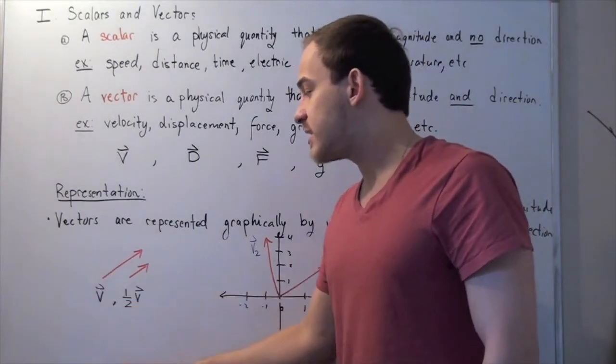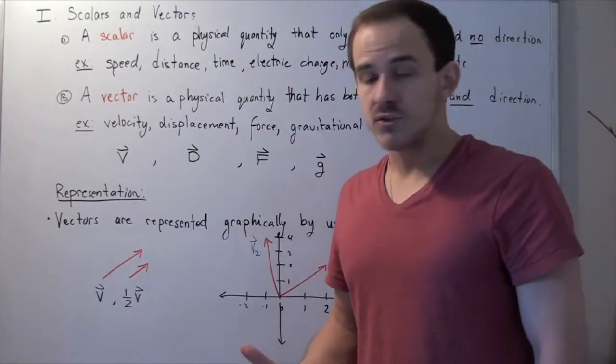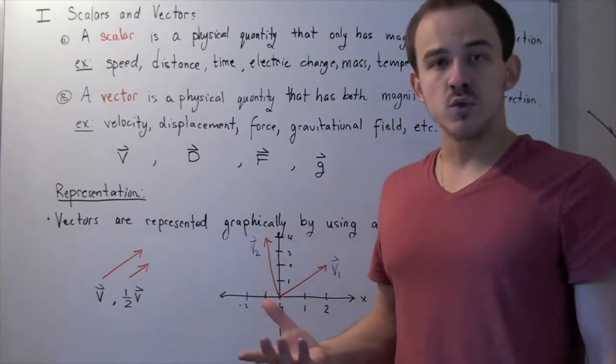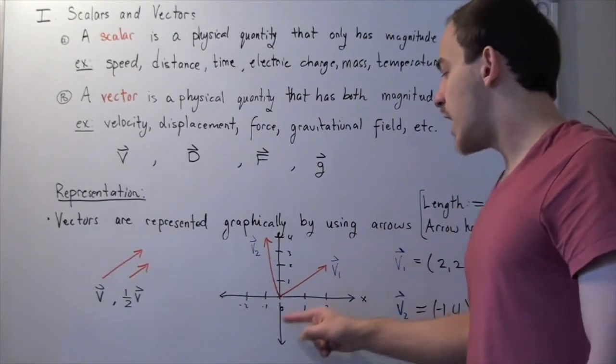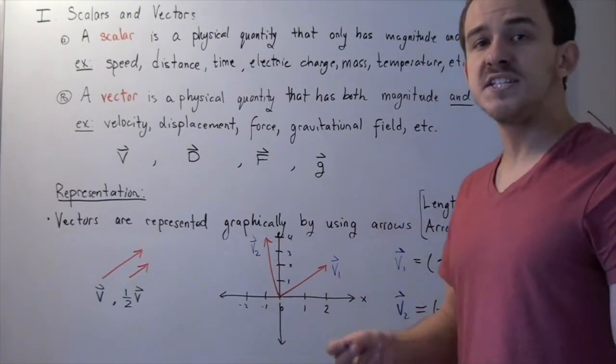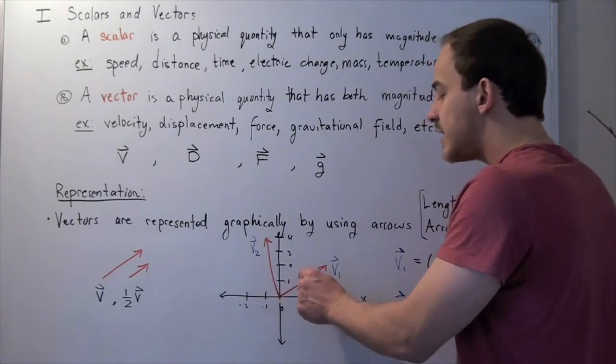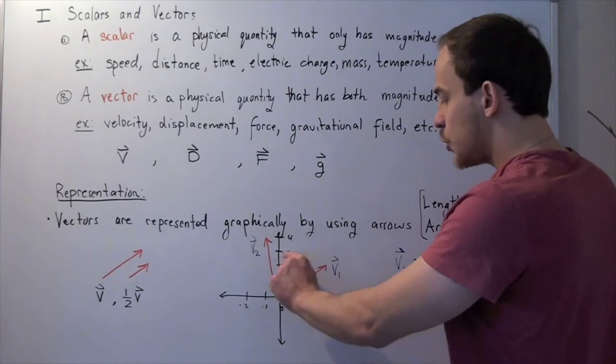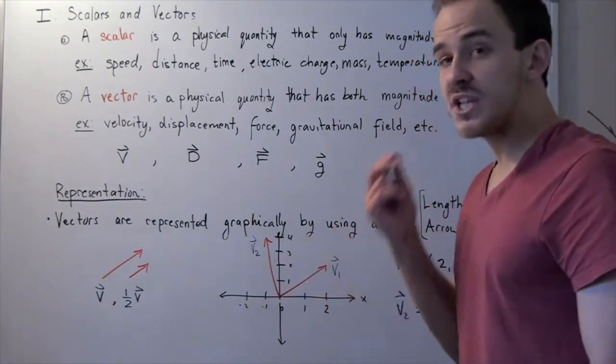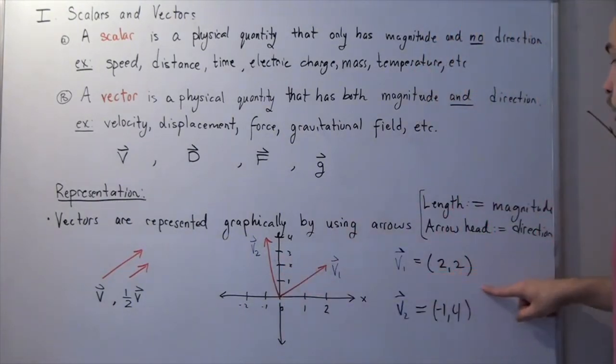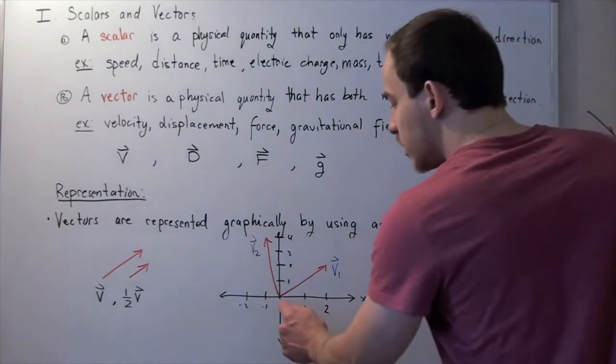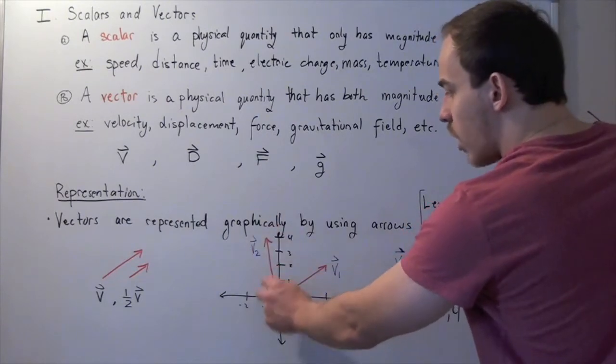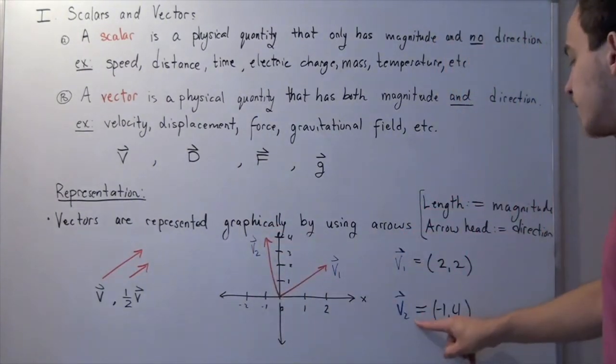Now we usually represent these on an XY plane, right? So if this is our XY plane, then we can represent two vectors using the following representation. We always begin at the origin and end at some point. So our point here is (2, 2). And the way we represent this vector is simply by writing the point (2, 2). Likewise, this vector begins at the origin (0, 0) and ends at the point (-1, 4). So this is how we represent our vector.